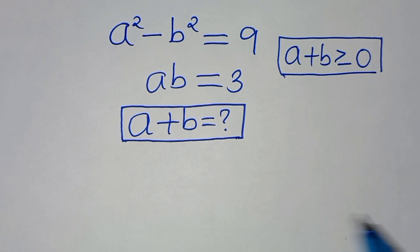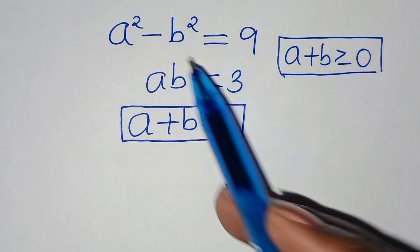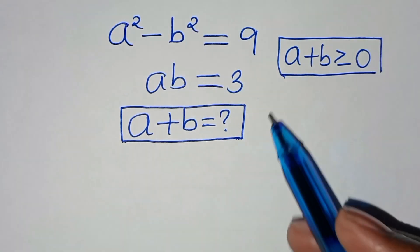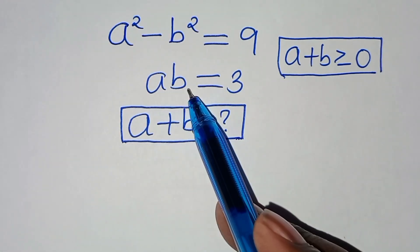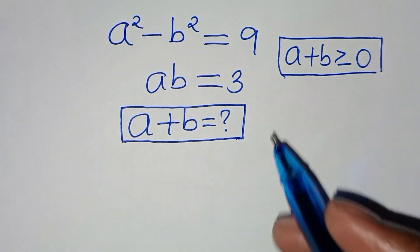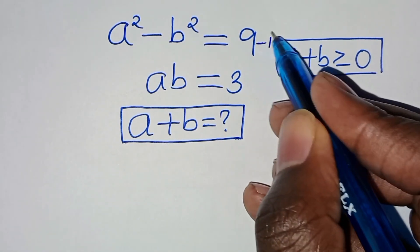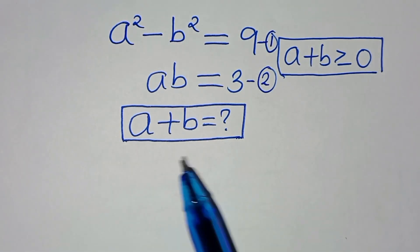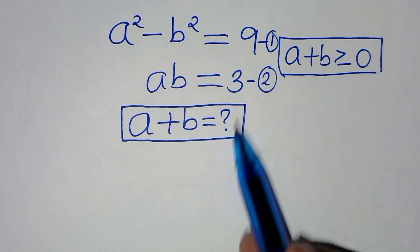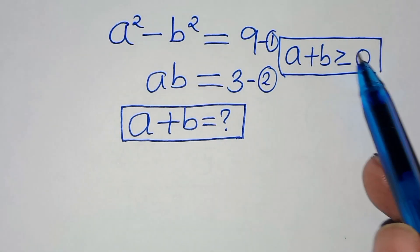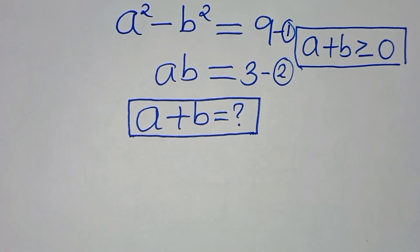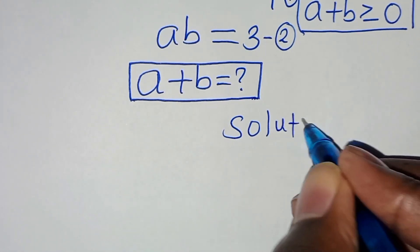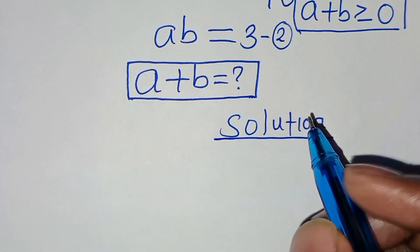Welcome, everyone. Let's solve this algebra problem: a² - b² = 9, which we'll call equation 1, and a × b = 3, which we'll call equation 2. We want to find the value of a + b, given that a + b ≥ 0.